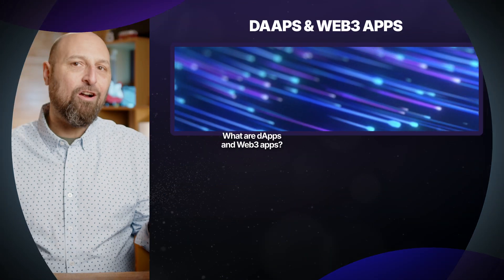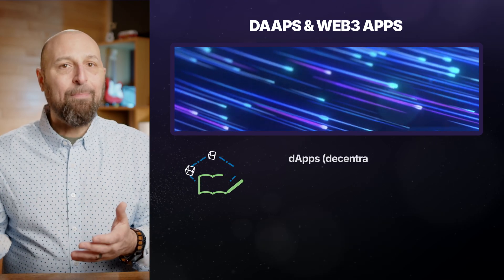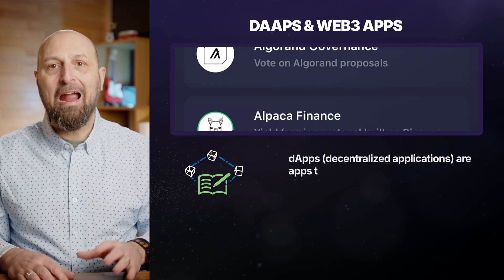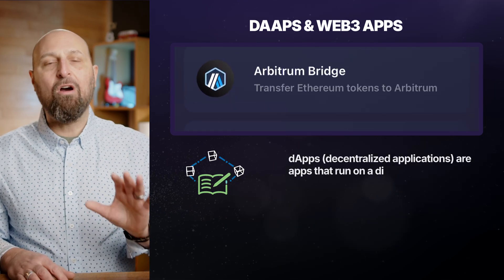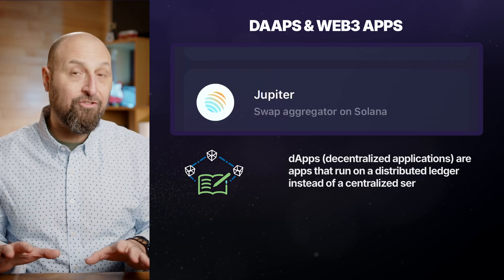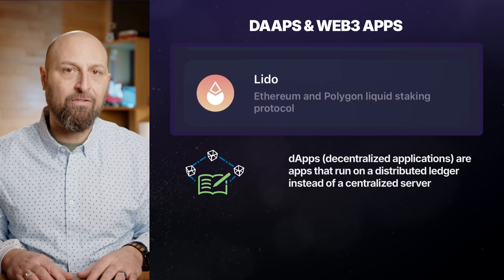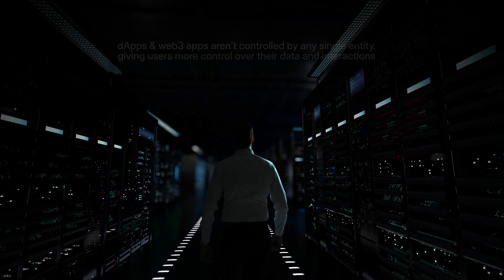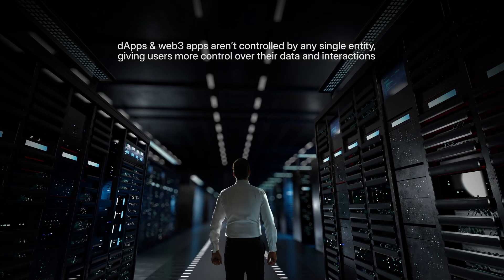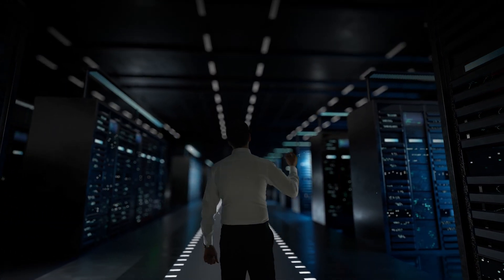So what exactly are DApps and Web3 apps? DApps, or decentralized applications, are apps that run on a blockchain — a distributed ledger technology — instead of a centralized server. This means they aren't controlled by any single entity, giving users more control over their data and interactions.